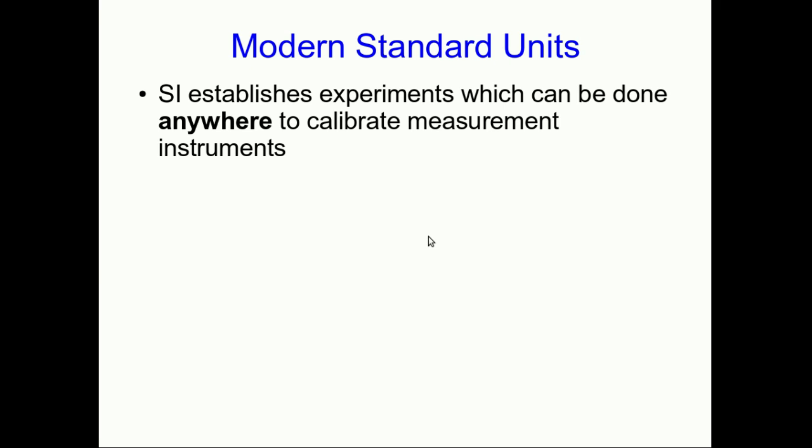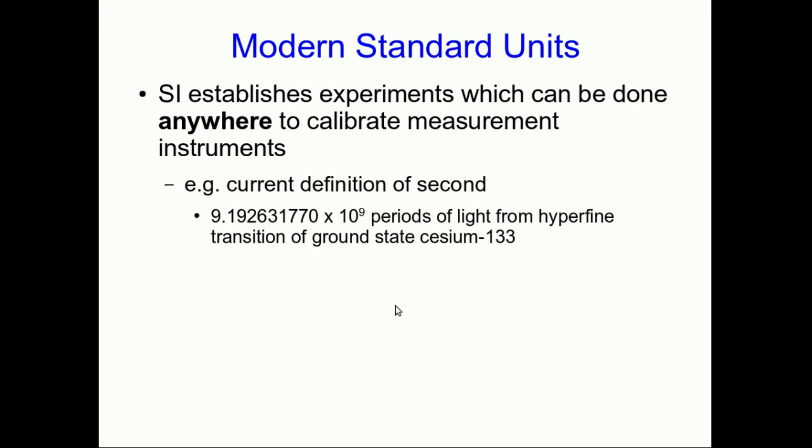Well, today we don't do that. We use reasonably unchanging measurement calibrations. The SI has to establish these experiments which you can do anywhere in the world to come up with a calibrated measurement instrument. For example, our current definition of the second is that you take cesium-133 and you make it emit a particular type of light that it emits, and you count the periods in the oscillations of the light. And that's your definition of the second. And so this means that in a factory, if they're trying to make high precision timekeepers or something else, they're carrying out something like this definition.